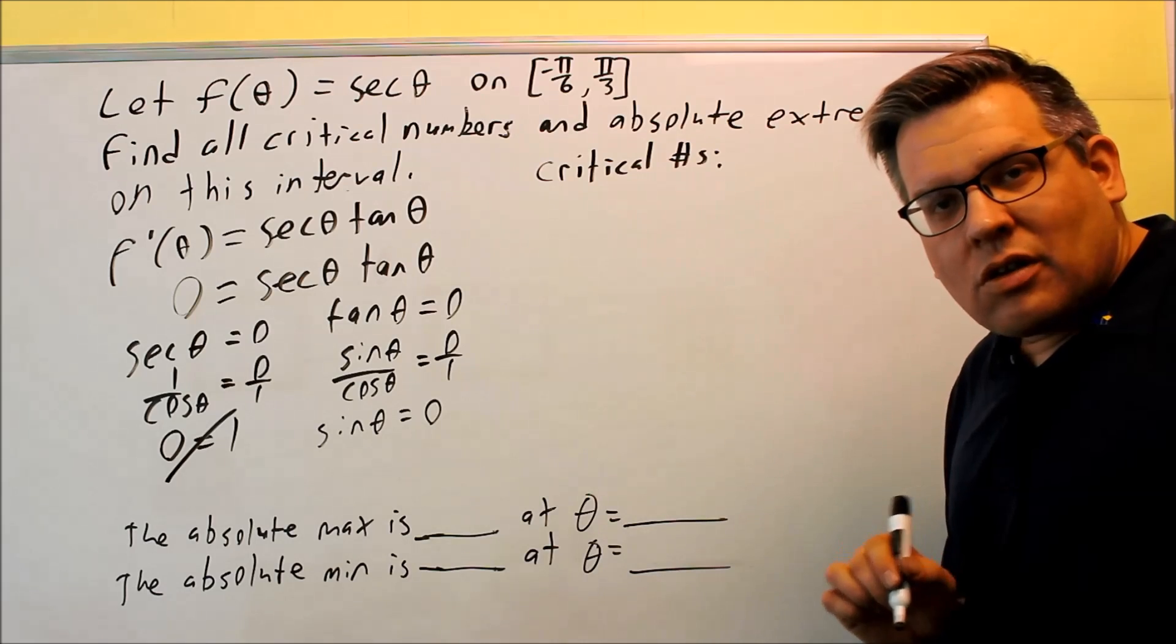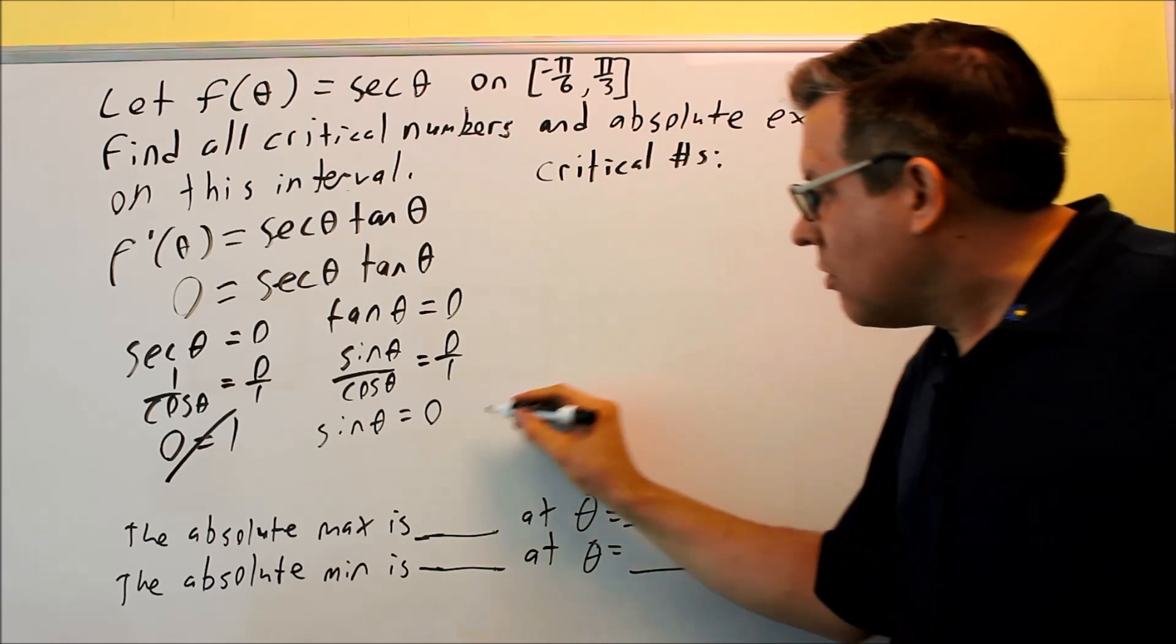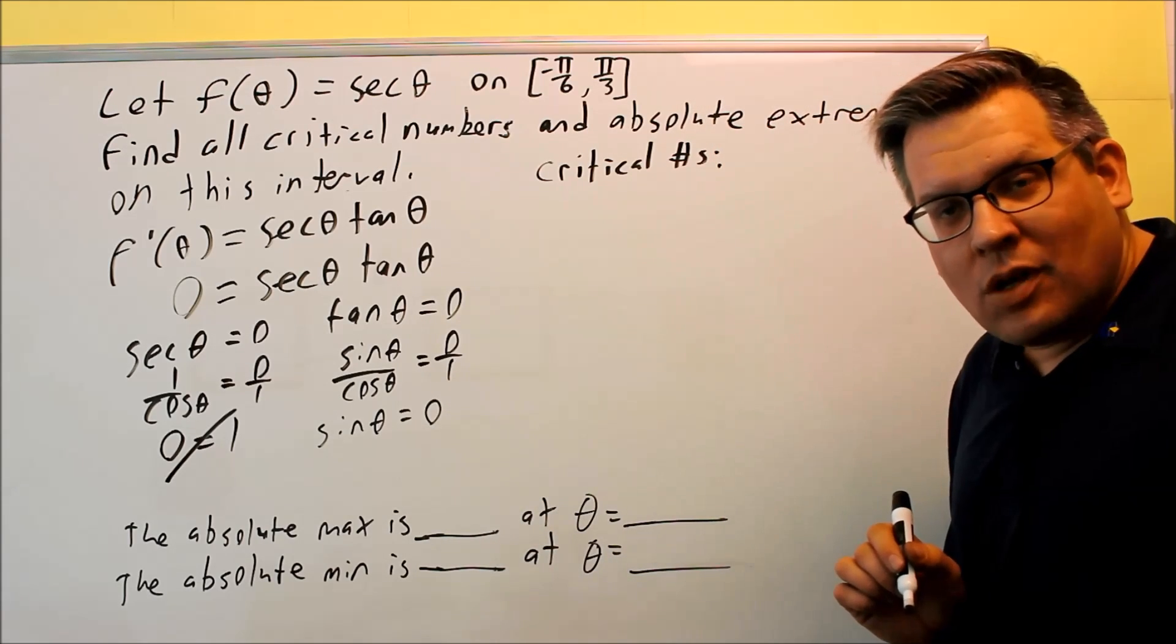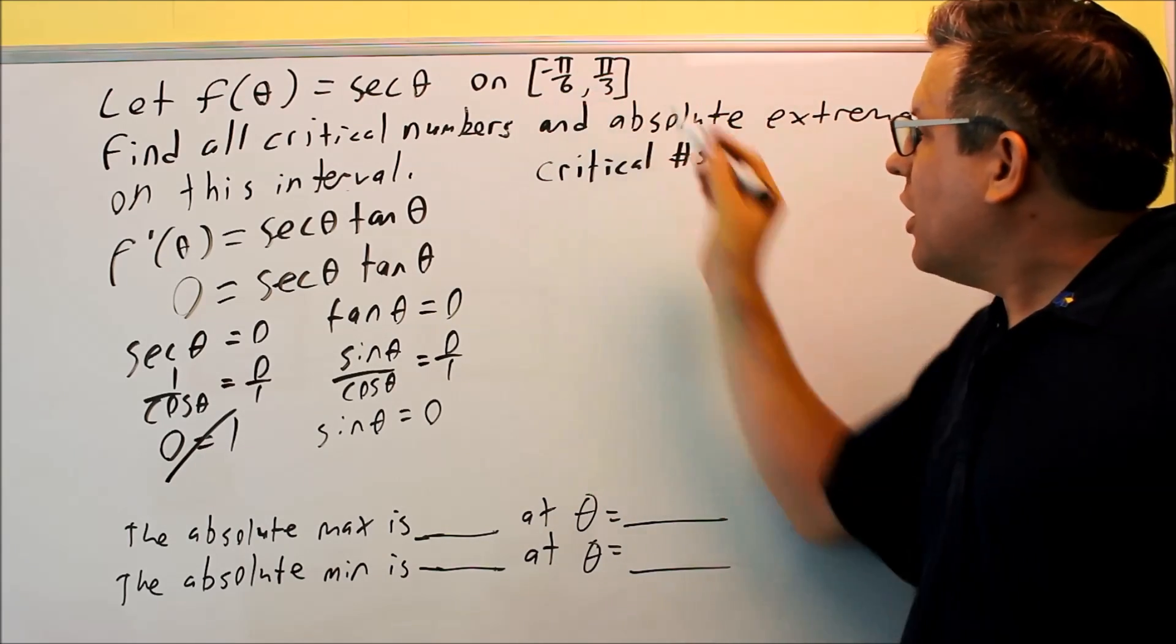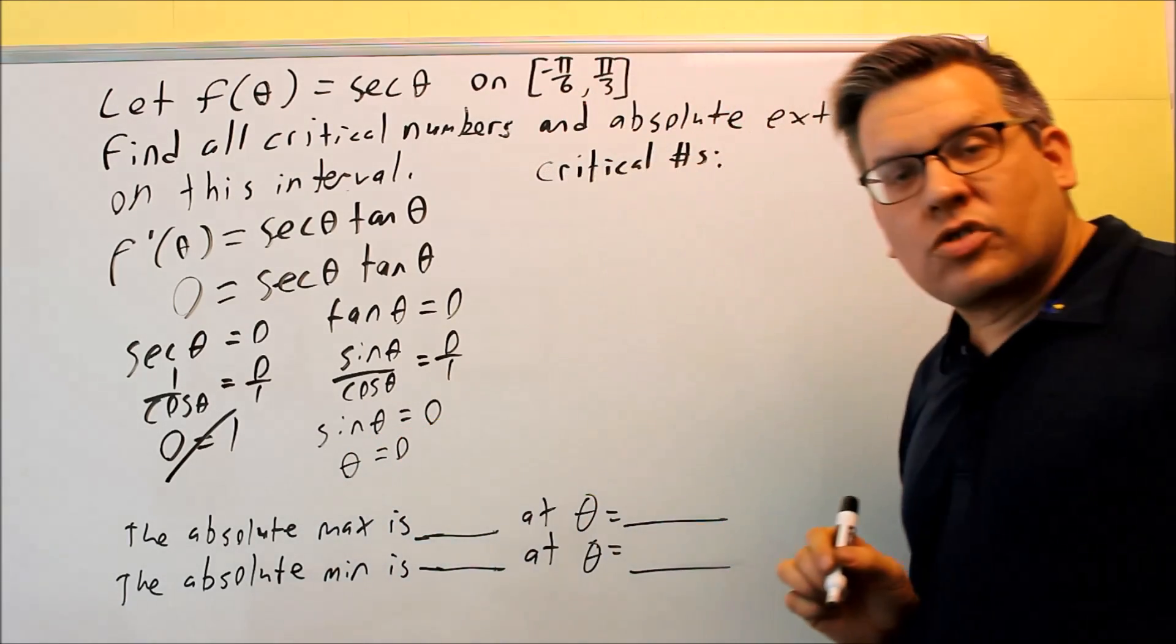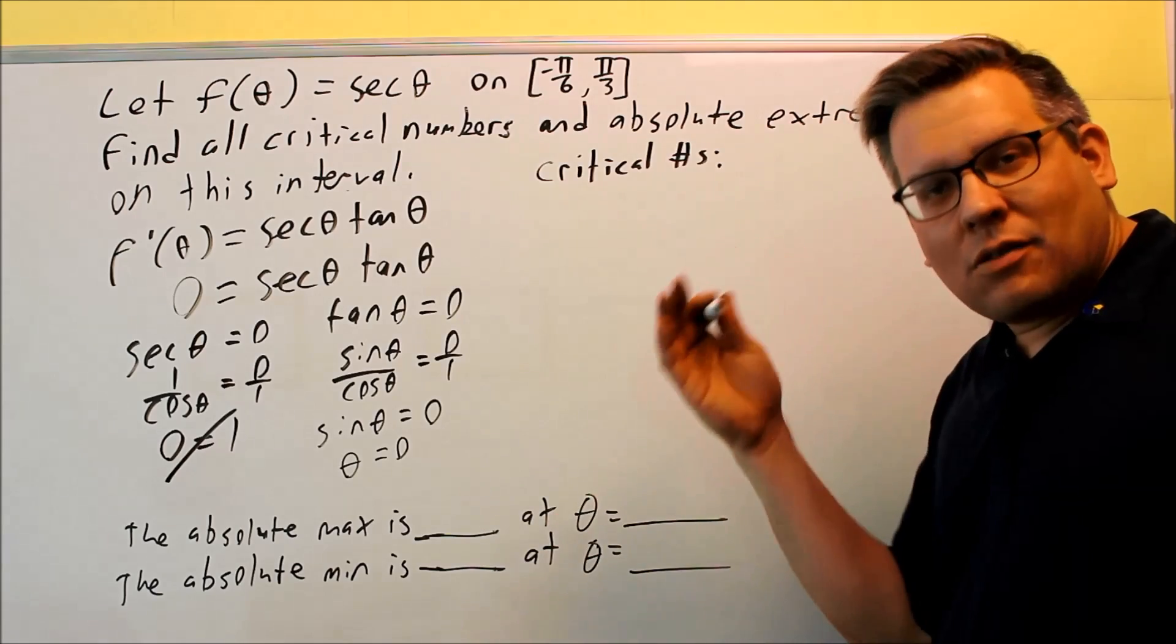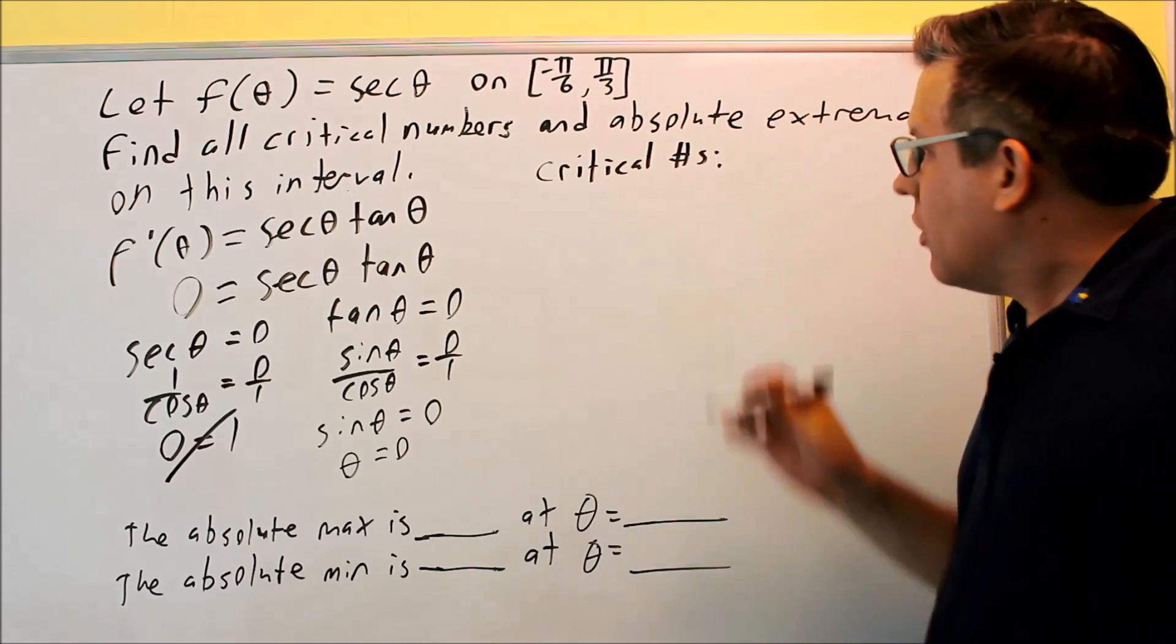So I want to look at the unit circle and look for any place on the unit circle where the y value is equal to zero because sine theta represents a y value. Now if I look at that, the only value I'll find that fits my interval is going to be theta equals zero. It's going to equal zero, pi, two pi, and so forth. But only on my interval, I'm just going to look at that number.